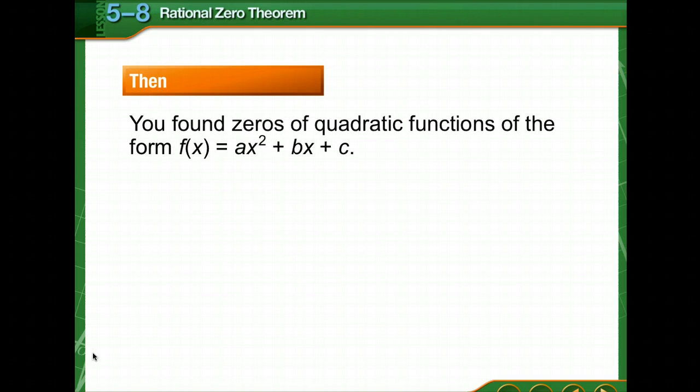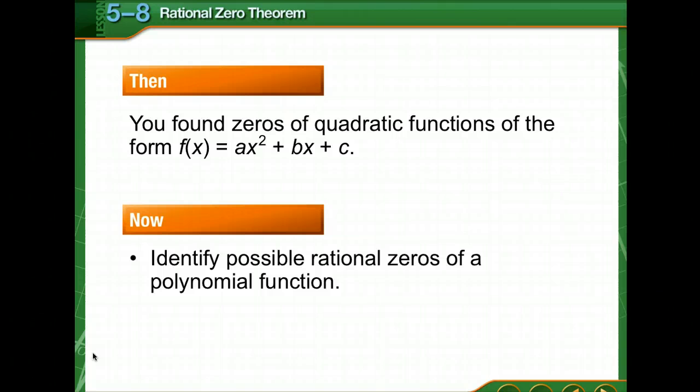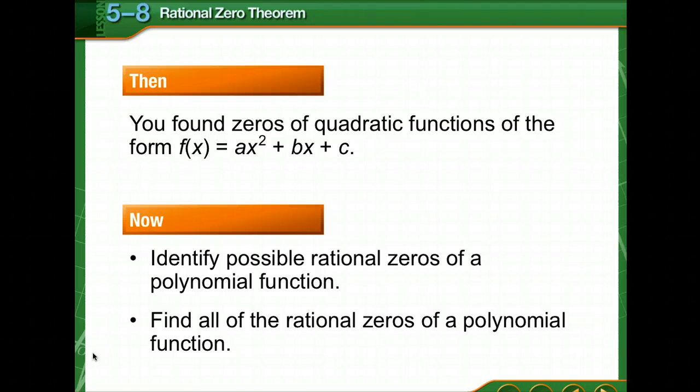Previously, you found zeros of quadratic functions of the form ax squared plus bx plus c. Now we're going to identify possible rational zeros of a polynomial function and find all of the rational zeros of a polynomial function.